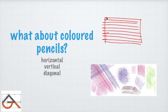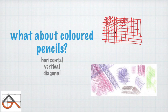After completing one layer, you start a second layer of strokes going in a different direction — like cross-hatching. You can use this layering technique for colored pencil work.